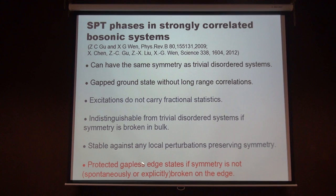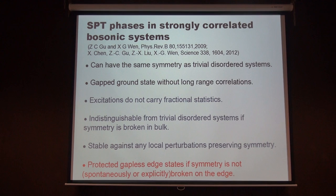In the two plus one dimensional system, the one-dimensional boundary is always gapless — in the sense that the spectrum has a continuum dispersion. But in three plus one dimensions, this gapless property sometimes also refers to topological phases with ground state degeneracy. So it's just saying there is no way to realize a trivial disordered state on the surface.